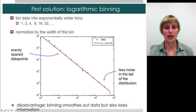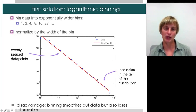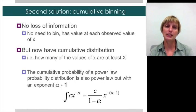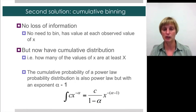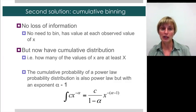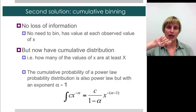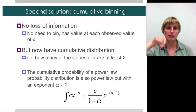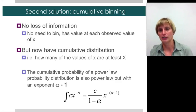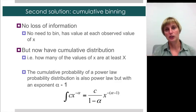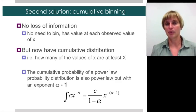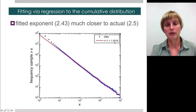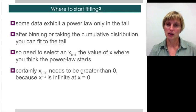But logarithmic binning smooths out the data and loses some information — when you aggregate into bins, there may be interesting features you won't recognize. So the second solution is to do cumulative binning, like all those plots I showed with solar flares and family names. There's no loss of information because each value captures how many observations you have of that value or lower, so you don't have zeros falling off. You can then do a regression to get the cumulative exponent, which is alpha minus 1, and here we get alpha minus 1 equal to 1.43 — much closer to the actual 2.5.